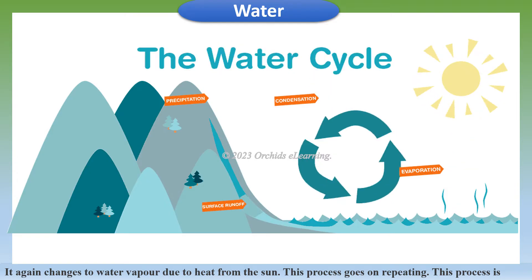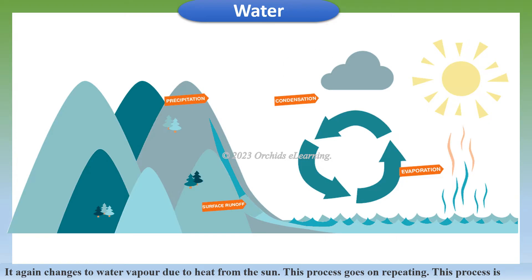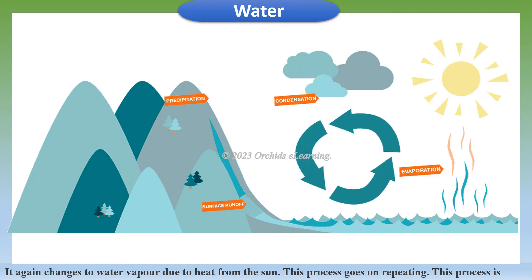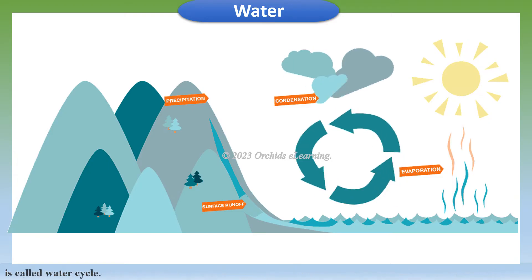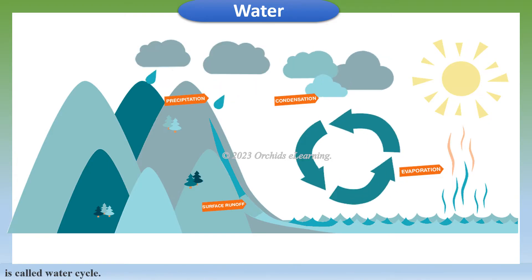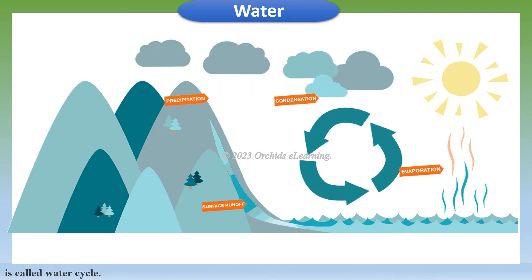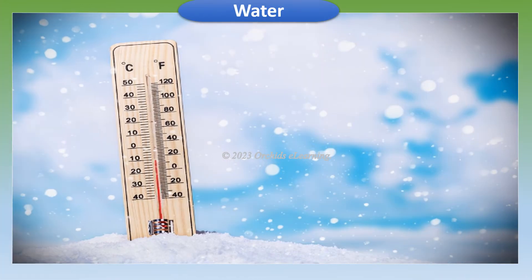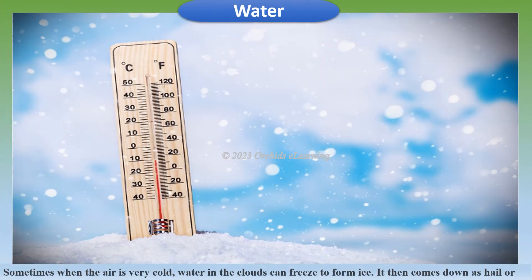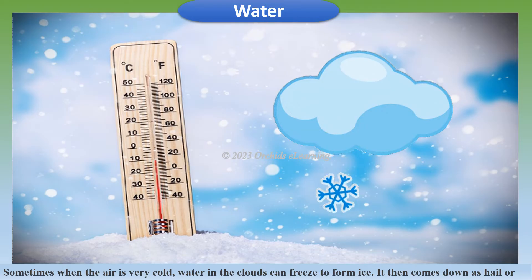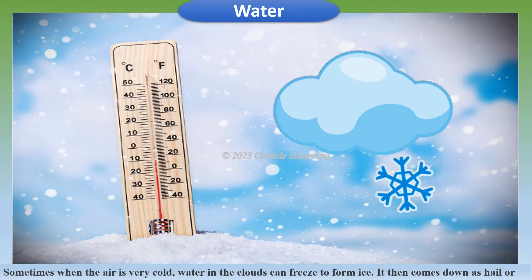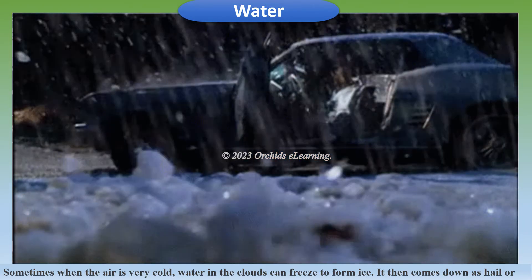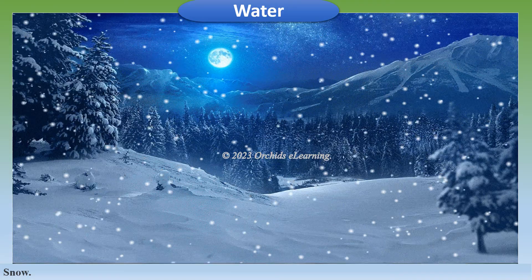The water again changes to water vapor due to heat from the sun, and this process keeps repeating. This process is called the water cycle. Sometimes when the air is very cold, water in the clouds can freeze to form ice, and it then comes down as hail or snow.